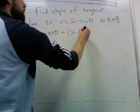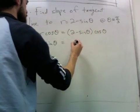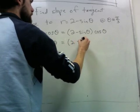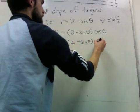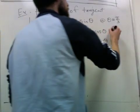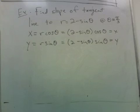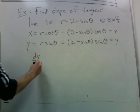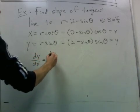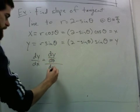So this curve has these parametric equations. The parameter is theta. To find the tangent line at that point, we can use the familiar formula: dy/dx equals dy/dθ over dx/dθ.